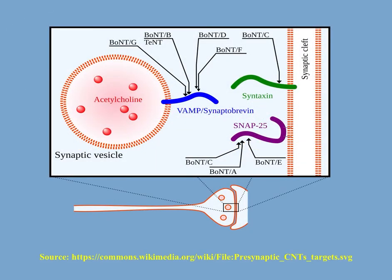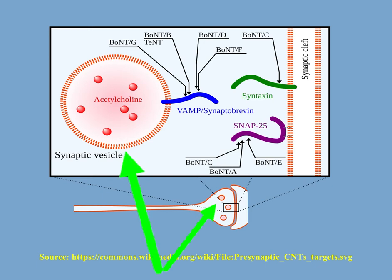Botox acts at the neuromuscular junction, which is the junction between the nerve endings and the muscles. It acts by inhibiting the release of acetylcholine, which is a neurotransmitter stored in small vesicles at the end of the nerve ending. Botox enters these vesicles and prevents the release of acetylcholine — this is how it works.